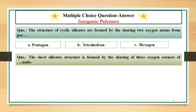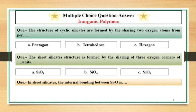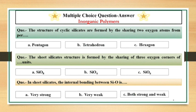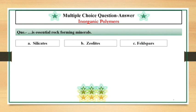The sheet silicate structure is formed by the sharing of three oxygen corners of dash dash units. SiO4. In sheet silicates, the internal bonding between SiO is very strong. Dash Dash is essential rock forming minerals. Feldspar.